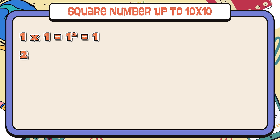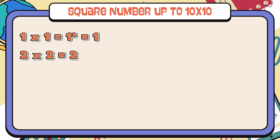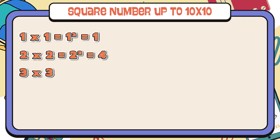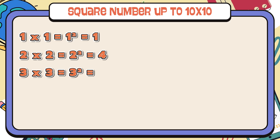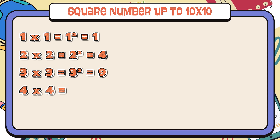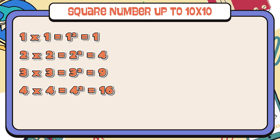2 times 2 is equals to 4, 2 squared is equals to 4. 3 times 3 is equals to 9, 3 squared is equals to 9. 4 times 4 is equals to 16, 4 squared is equals to 16.